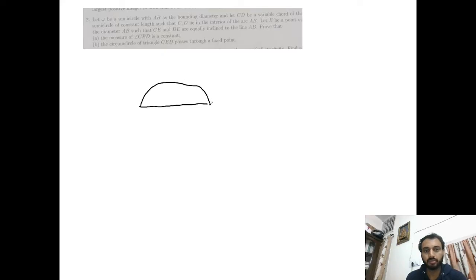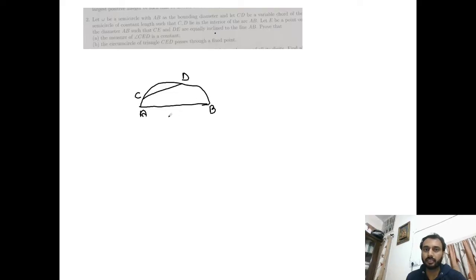Hello dear students, we are discussing question number two of RMO. In this question, we have a semicircle with diameter AB and CD is a variable chord of the semicircle. There is a point E on AB such that CE and DE are equally inclined to the line AB. Let's say these two angles are each equal to theta.